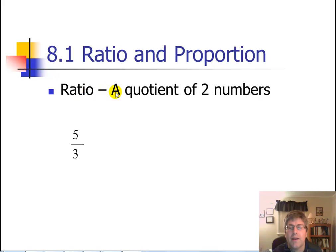So, ratio. Ratio by definition is simply a quotient of two numbers. It is a fraction. So we can express a ratio as something like the fraction five thirds. We can also look at this as 5 colon 3 or the ratio of 5 to 3.